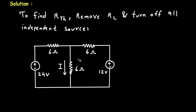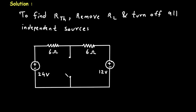Now here in this circuit, we have to find this current I. That means this will be our load resistor. And these two terminals will be RTH.